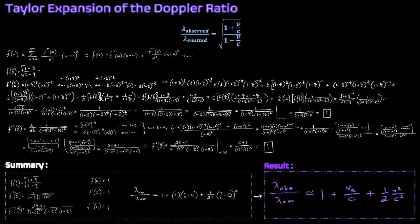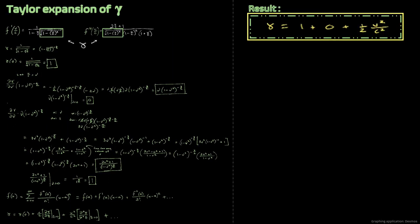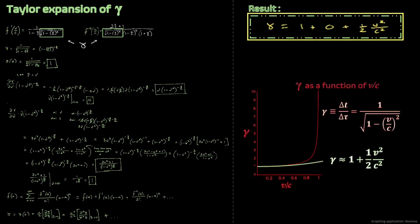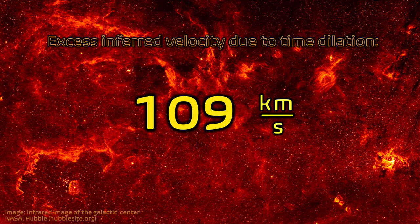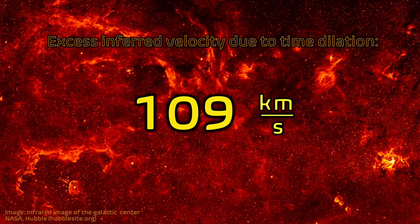I start with the Doppler relation, and then use calculus to derive the equation in purple. I verify that the derived equation works, using a graphing application and more calculus. The Newtonian model implies the star is moving 109 km per second faster than it really is, by not accounting for time dilation.